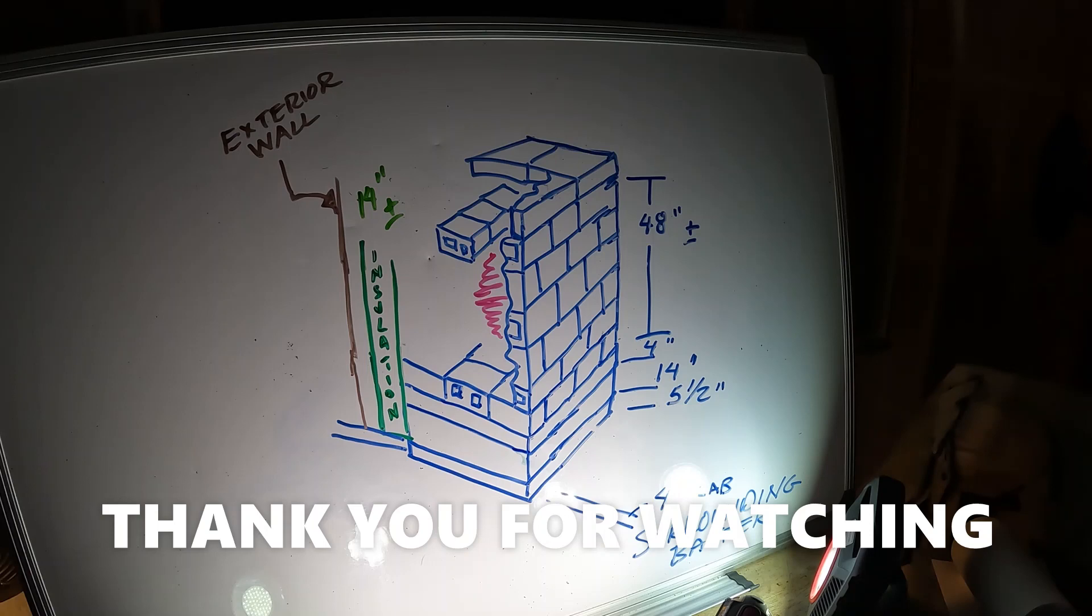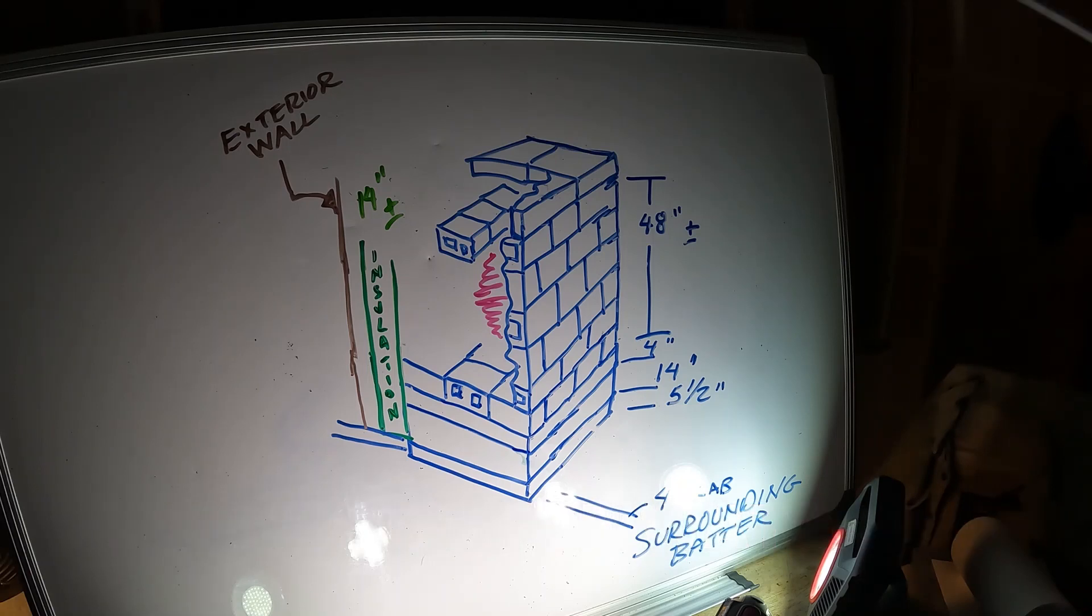Because of the dimension of the cinder block, this is the size I came up with, a 48 by 48 inch cube. And this is probably going to weigh more than the bathtub. I'm guessing over 3 ton, I guess.